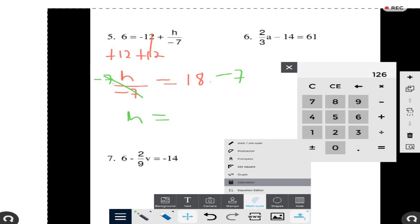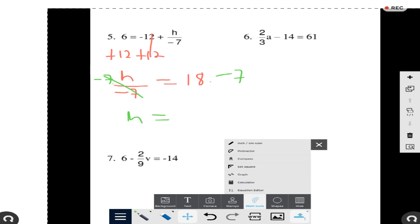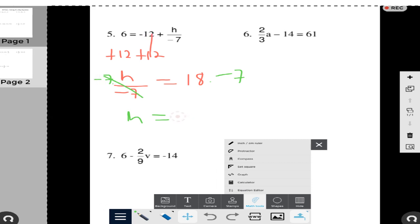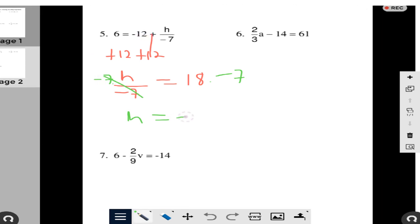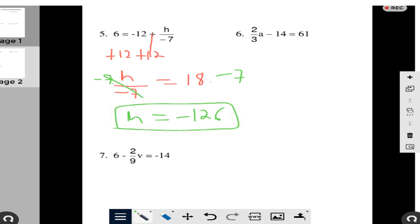That's going to be 126, so that's going to be negative 126, because it was negative times positive. Let's do the next one.